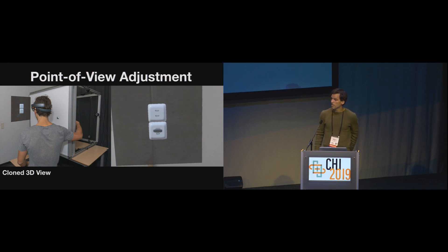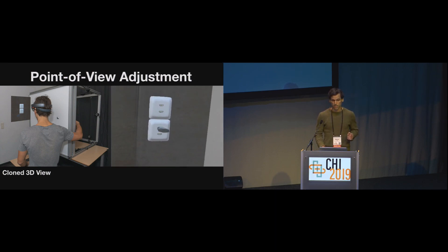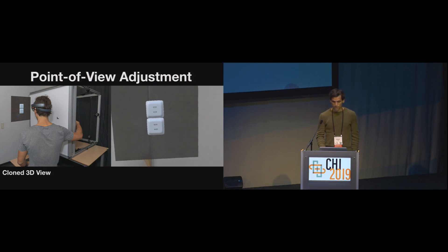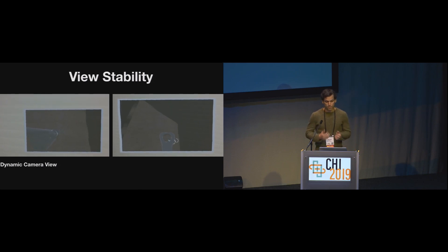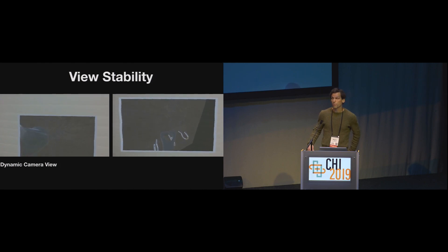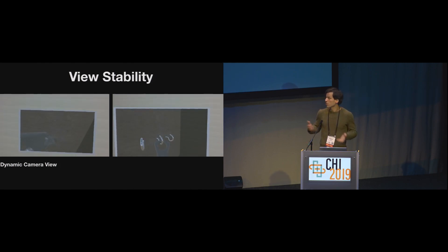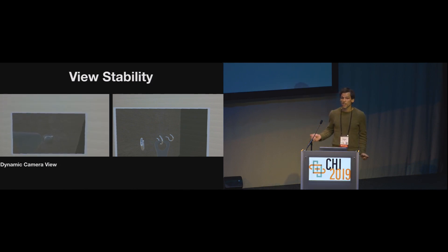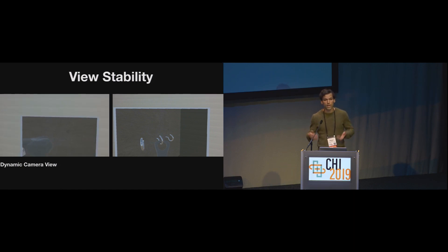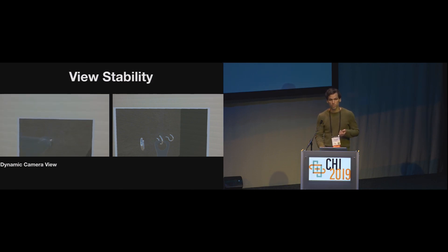This brings us to the second factor explaining the dynamic camera's poor performance: view stability. Participants found the remote imagery from the dynamic camera confusing because the view changed too quickly. An unstable view is not just unhelpful — it can actually impede performance by overriding the user's reliance on proprioception, past knowledge of objects, and the tactile feedback from interacting with the occluded objects.